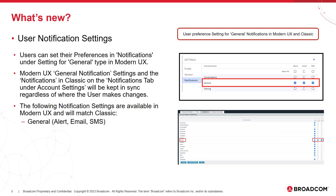What's new — user notification settings. Users can set their preferences in notifications under settings for general type in Modern UX. Modern UX General Notification settings and the notifications setting in classic, on the notifications tab under account settings, will be kept in sync regardless of where the user makes changes.